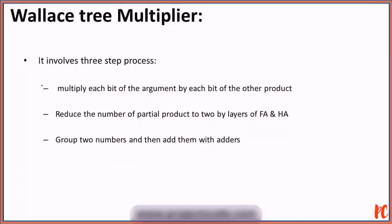It involves a 3-step process to multiply two numbers. Number 1: Multiply each bit of the argument by each bit of the other product. Number 2: Reduce the number of partial products to 2 by layers of full adders and half adders. Number 3: Group two numbers and then add them with adders.